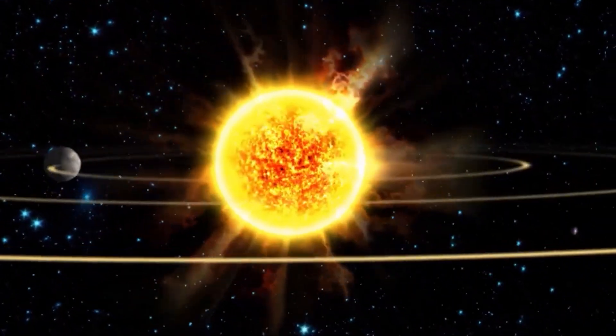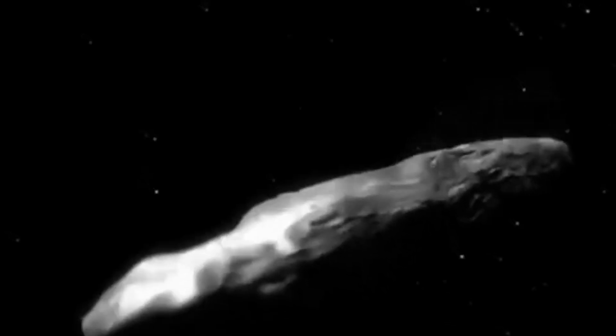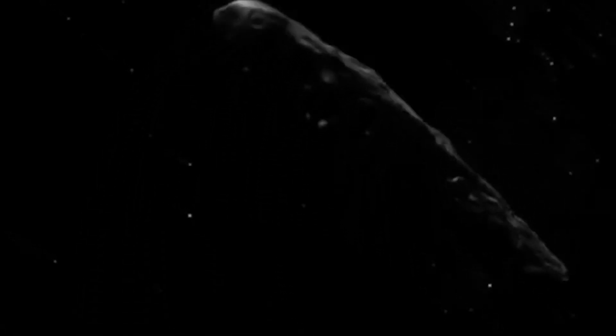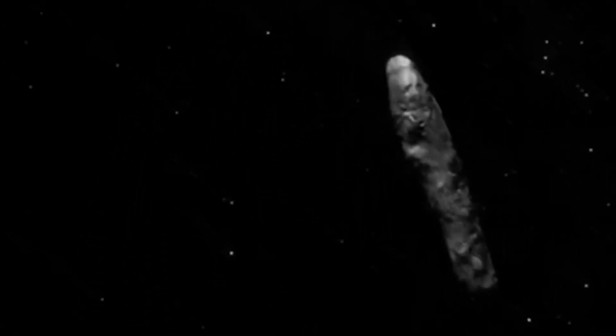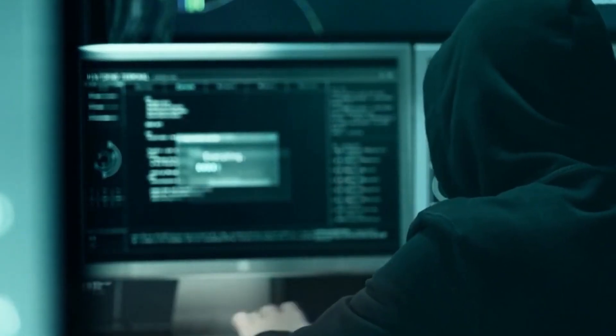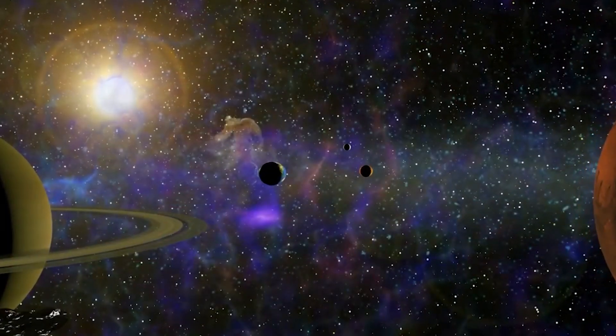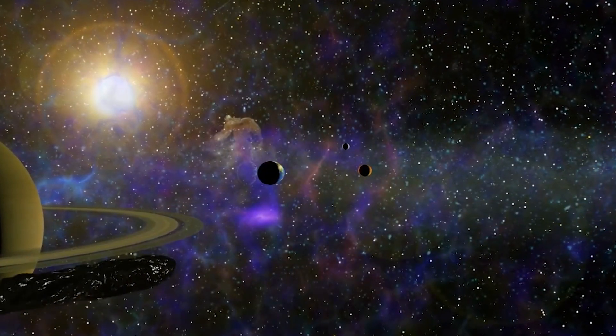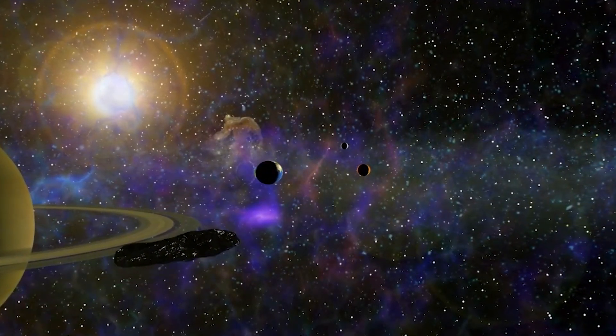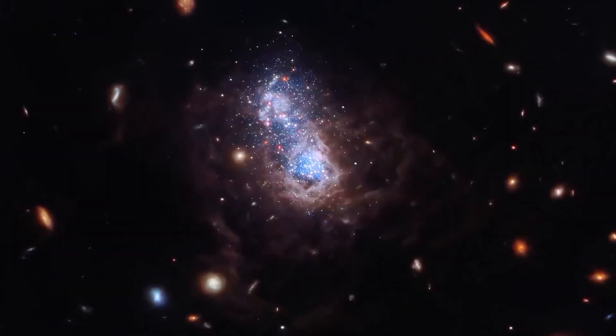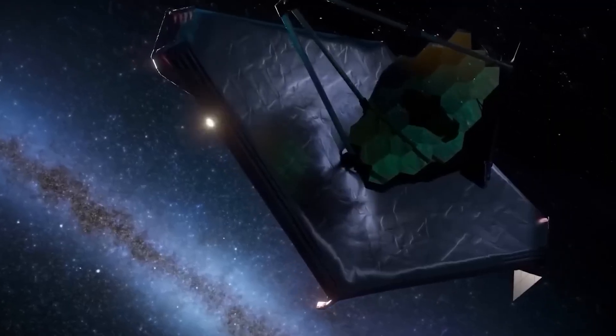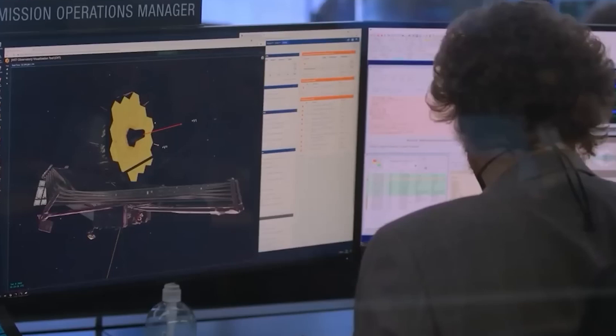One of the most compelling theories about Oumuamua's origin involves a catastrophic event: a planet torn apart by a massive star or black hole. Such an event could stretch and distort planetary fragments, creating objects like Oumuamua. If this theory holds, Oumuamua is more than a traveler. It's a relic of a lost world, carrying the scars of its violent past.